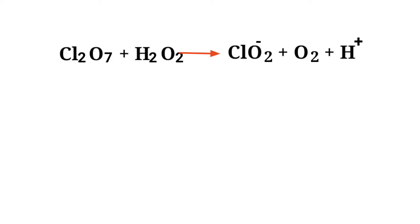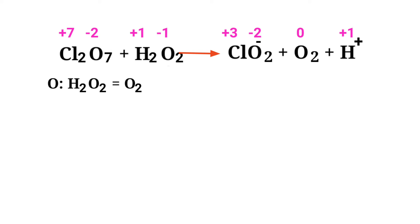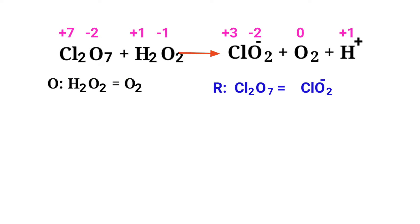Figure out the reducing and oxidizing agents by the rules of assigning oxidation numbers. In the ion-electron method, one reaction is divided into two half-reactions. In this equation, oxygen has a charge of minus one and is changing to zero, so oxygen is being oxidized. Chlorine has a charge of plus seven and is changing to plus three, so chlorine is being reduced.